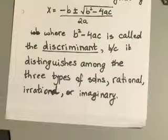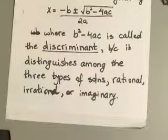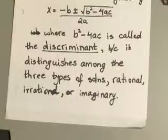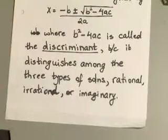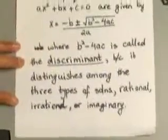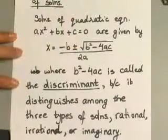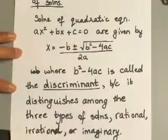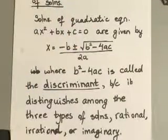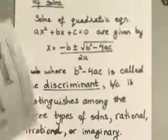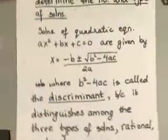Basically, are you going to end up with a rational solution, are you going to end up with an irrational solution, or are you going to end up with an imaginary solution? So this discriminant is basically what helps us determine what sort of solutions to expect.